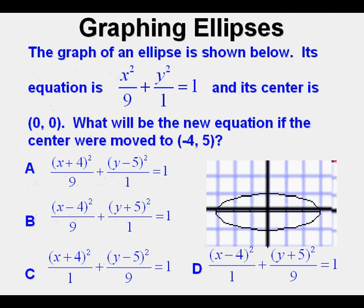Here's the next problem. The graph of an ellipse is shown below. Its equation is x²/9 + y²/1 = 1 and its center is (0, 0). What will be the new equation if its center were moved to (-4, 5)? If we remember that in a horizontal ellipse the biggest number is underneath the x² term this helps us to immediately eliminate answers C and D. Next to choose between A and B we need to remember that x plus a number shifts the ellipse to the left so therefore A has to be correct since it's x + 4 shifting it 4 units to the left.